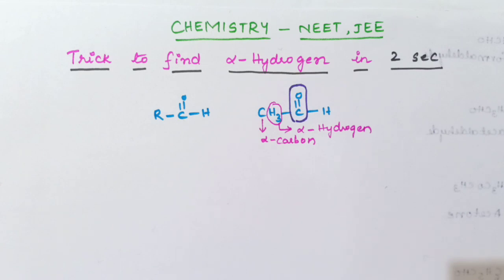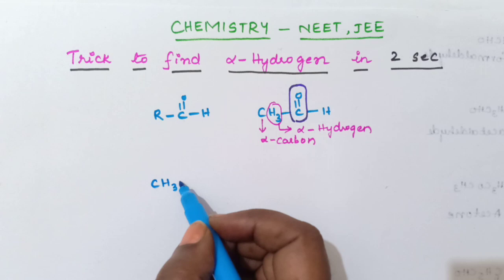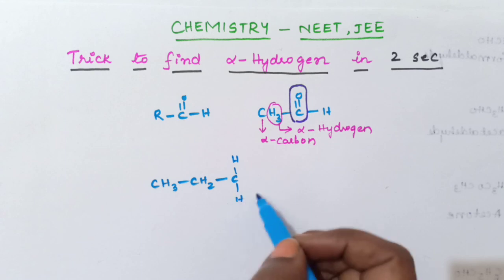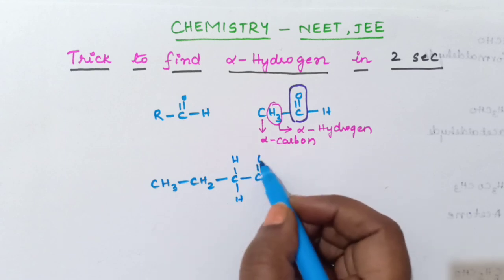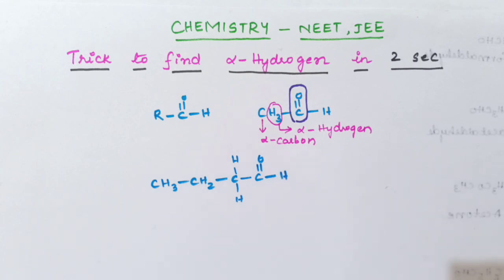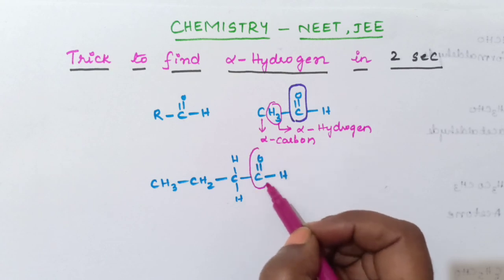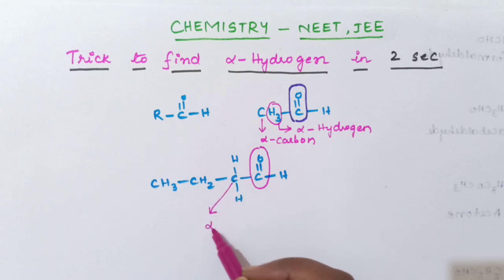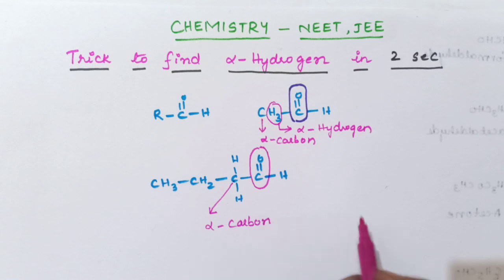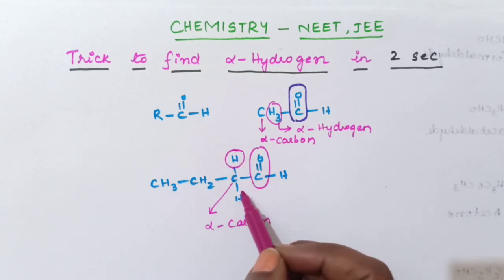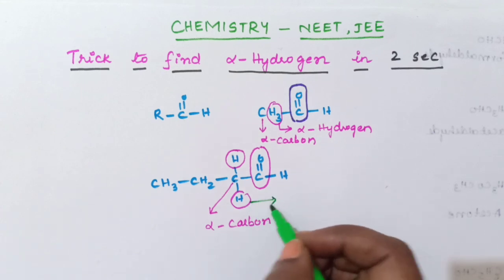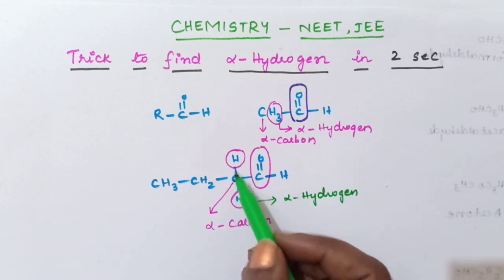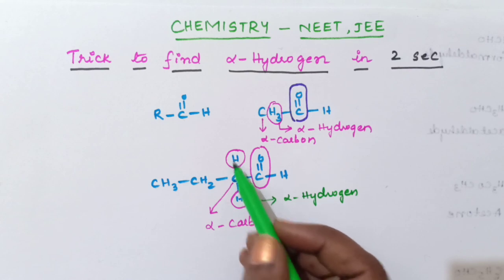Let me take one more example. Suppose you take CH3-CH2-CH2-CH2-CHO — again this is an aldehyde. In this aldehyde, this is the carbonyl carbon. The carbon which is next to this carbonyl carbon is called as alpha carbon. And these two hydrogen atoms attached to that alpha carbon are called as alpha hydrogen. So the hydrogens attached to the alpha carbon are called alpha hydrogen.